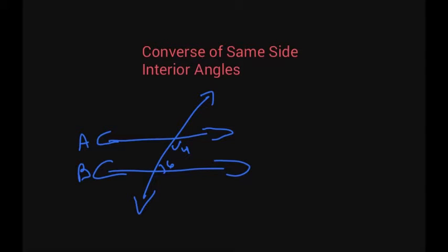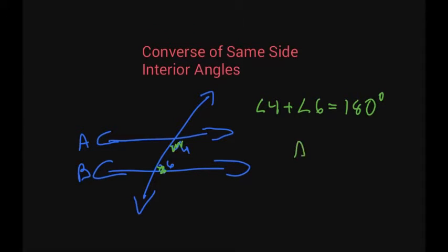Now the converse of same side interior angles. Just angles 4 and 6 — so if angle 4 plus angle 6 equals 180, then A and B are parallel. If 4 and 6 equal any other number than 180, then they're not parallel.